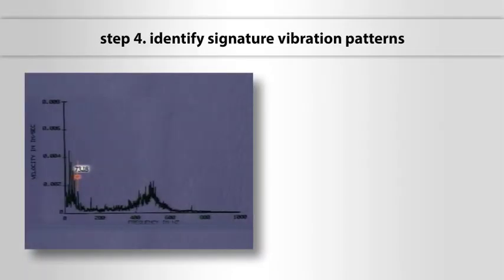Step 4: Identify signature vibration patterns. The signature vibration we're looking for is the vane pass at 73.18 Hz. There are several significant peaks to the right of the one-times, and with a little searching, we can find an exact match at 73.18 Hz.